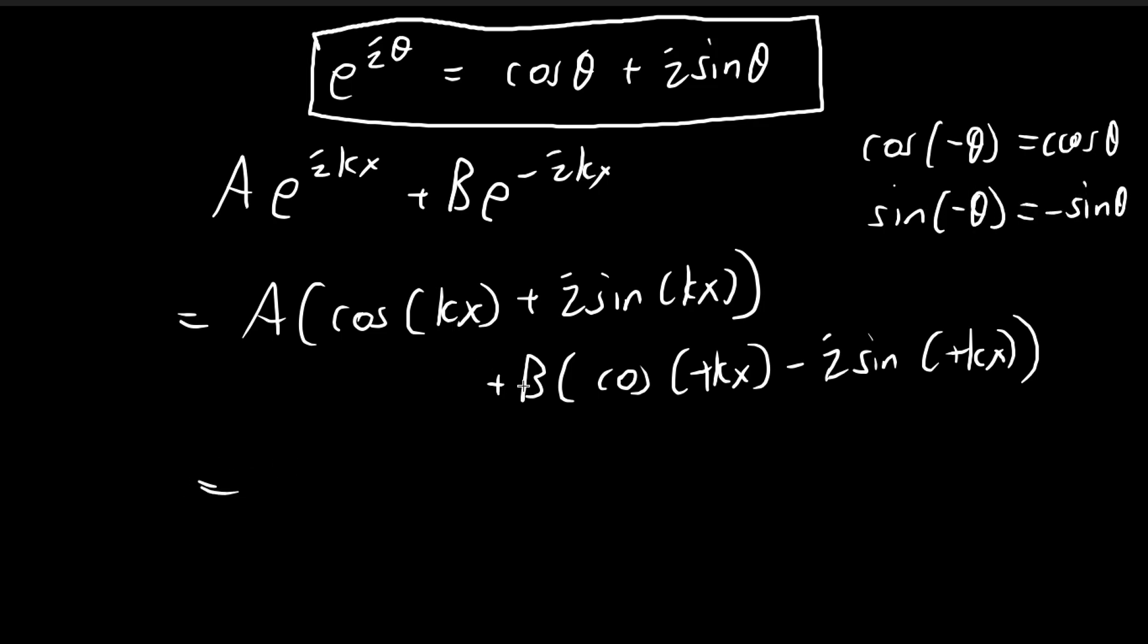So now I can group up some of the terms together. So I have a plus b times cosine kx, and then I have i times a minus b times sine kx.